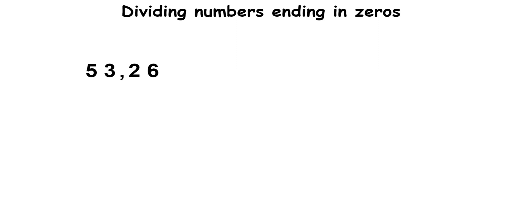But first, it's important to know that numbers can be made 10, 100, or even 1,000 times smaller by dividing the number by 10, 100, or 1,000. For example, take the number 53.26. By dividing the number by 10, you would be making the number 10 times smaller. This means that the decimal in 53.26 would need to be moved one space to the left.